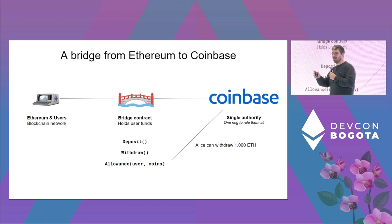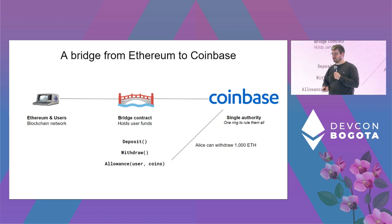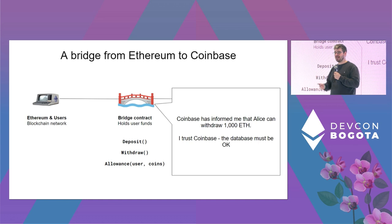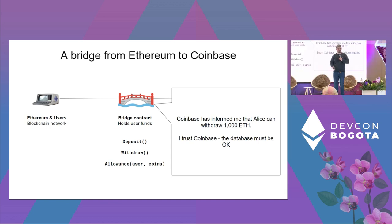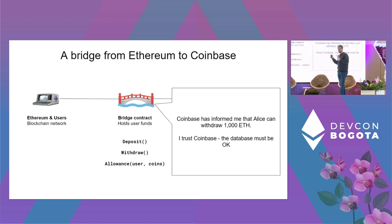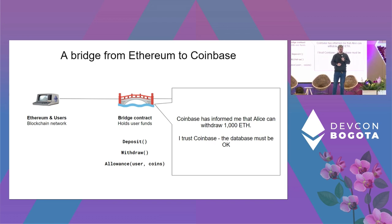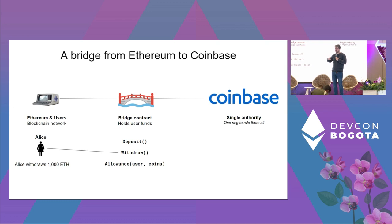Coinbase sends a message to the bridge saying, 'Let Alice withdraw her 1000 ETH.' From the bridge's perspective, it has to be convinced that Alice is entitled to this 1000 ETH. In the Coinbase example, the bridge will just blindly trust Coinbase — if Coinbase says Alice is entitled, she gets her funds, and we're all happy.